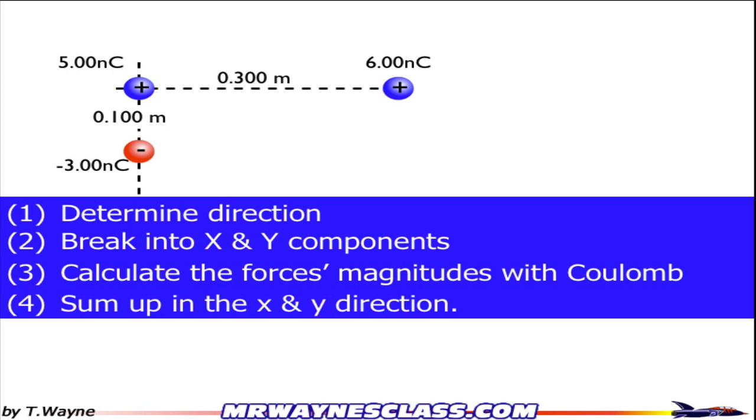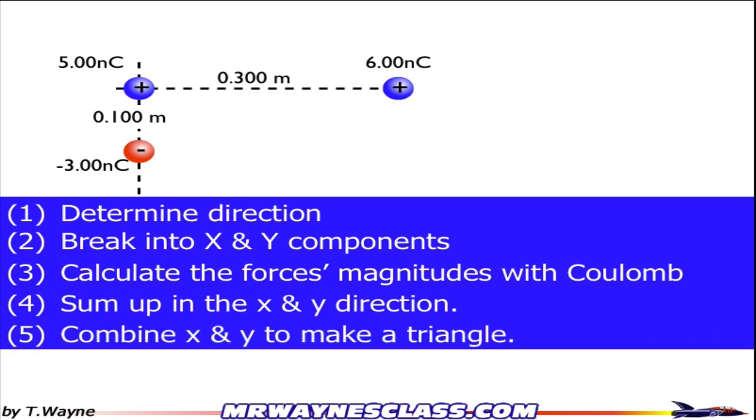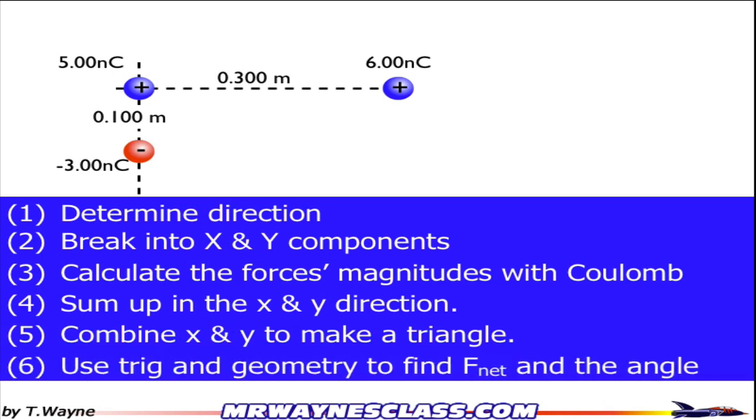You'll have to sum up the forces in the x and y direction. You'll have to combine the x and y to make your solutions triangle. And then finally, you're going to use trig and geometry to find the actual answer, which is the F net and the angle.